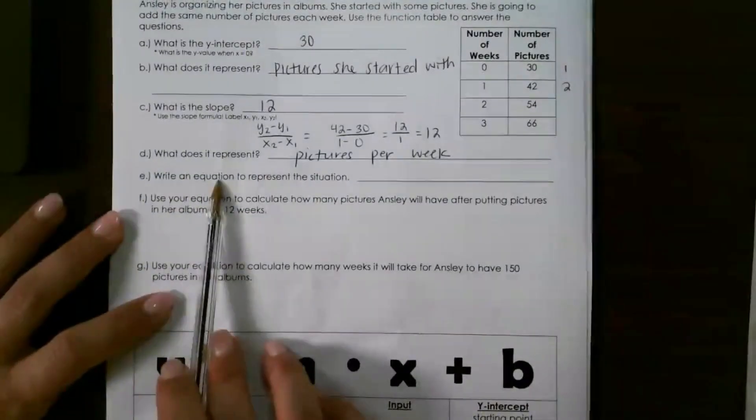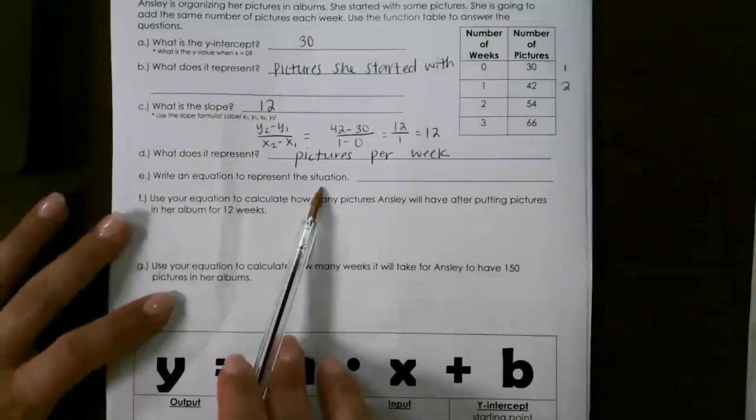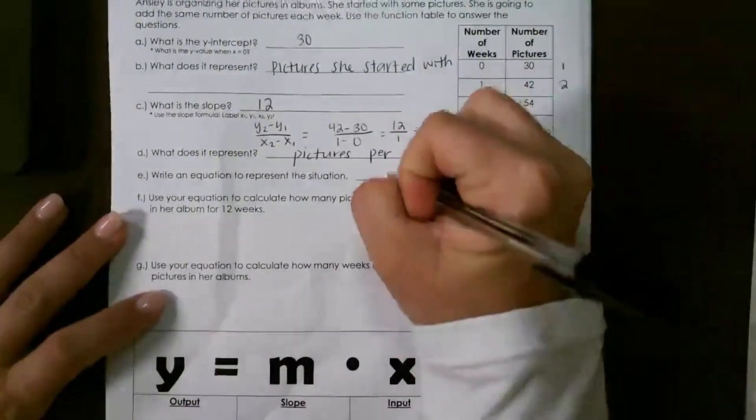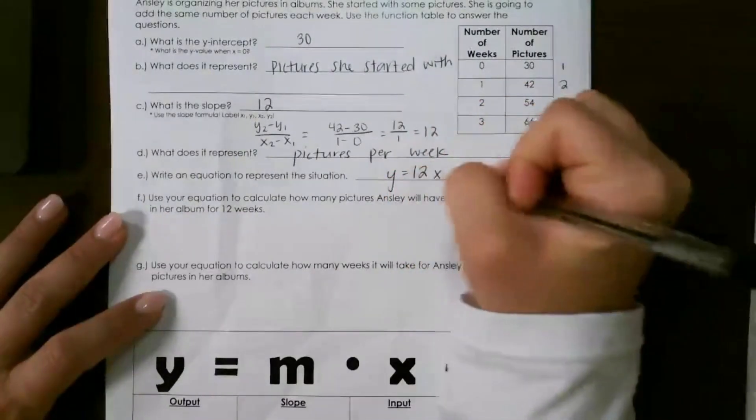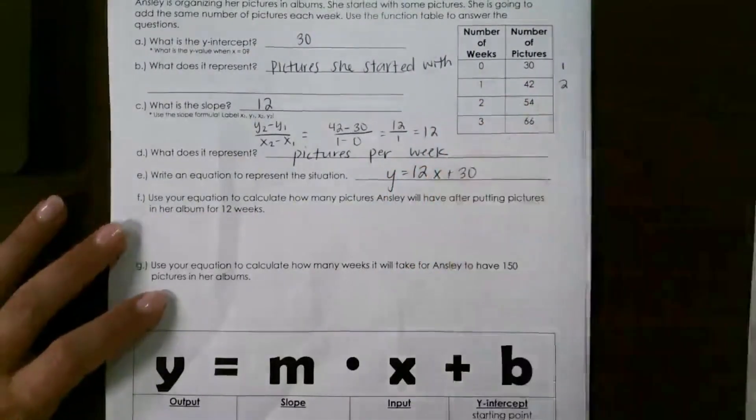Next, write an equation to represent the situation. So I have y equals - our slope is 12 and our y-intercept was 30.